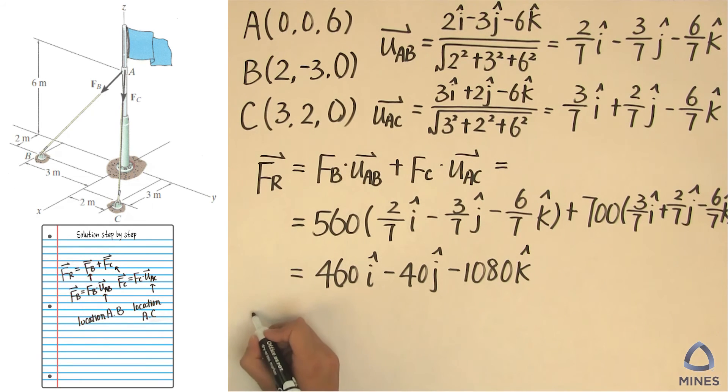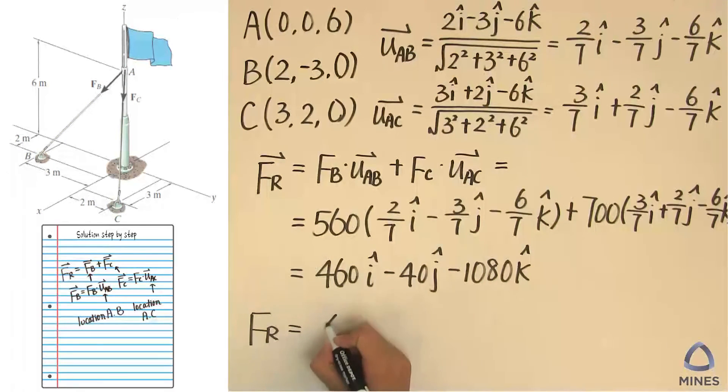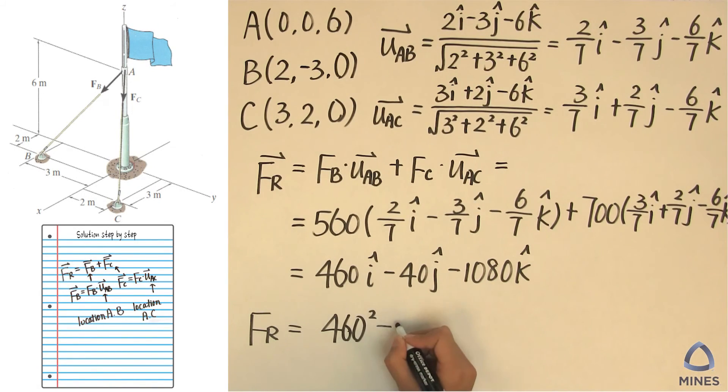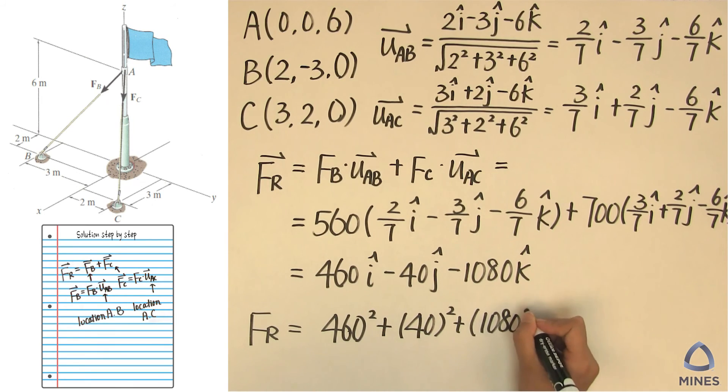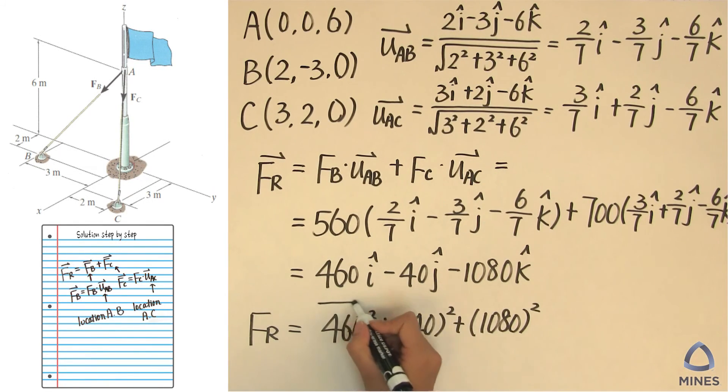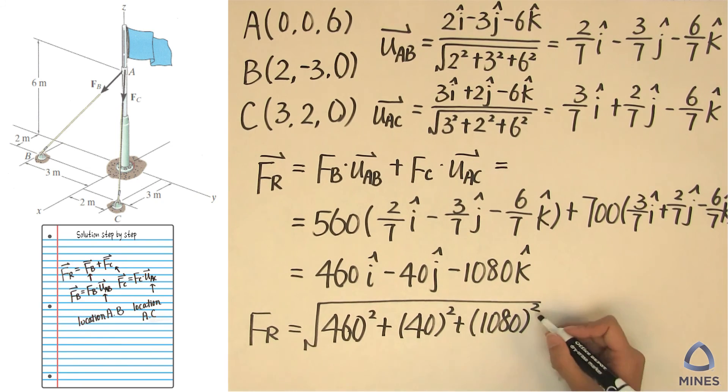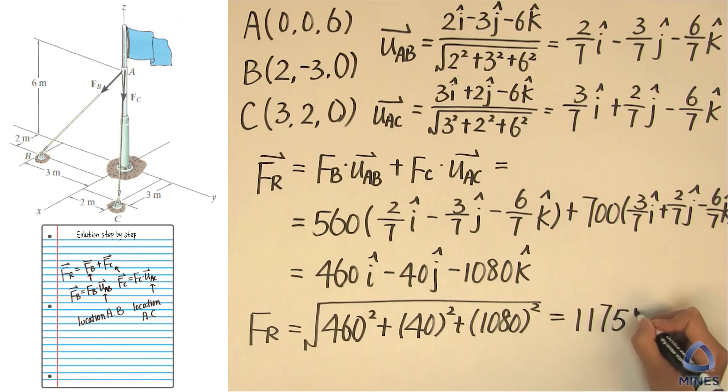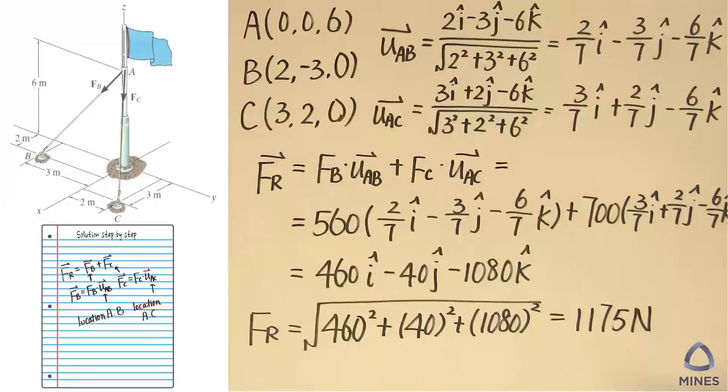So the magnitude of your total resultant force will be - take the square root of each component. Finally, the magnitude of your force will be 1175 newtons.